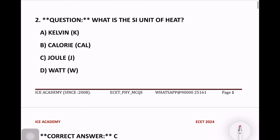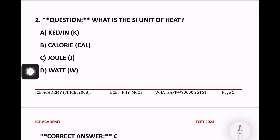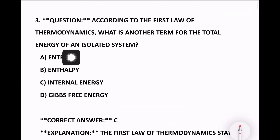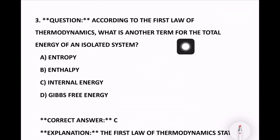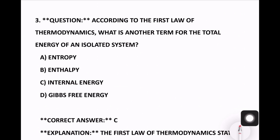Next question: What is the SI unit of heat? Options are Kelvin, Calorie, Joules, Watt. The right answer is Joules. Next question: According to the first law of thermodynamics, what is the other term for the total energy of an isolated system? Options are entropy, enthalpy, internal energy, Gibbs free energy. The right answer is internal energy.